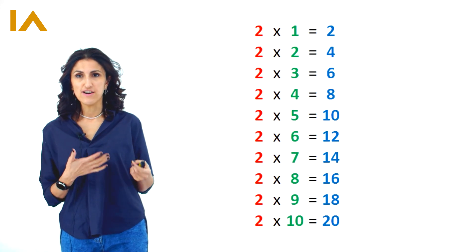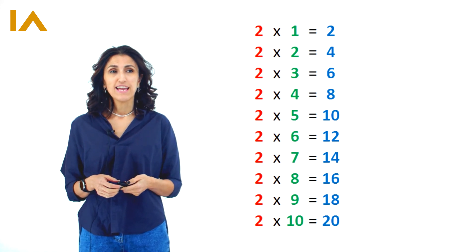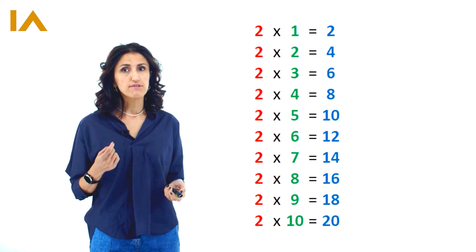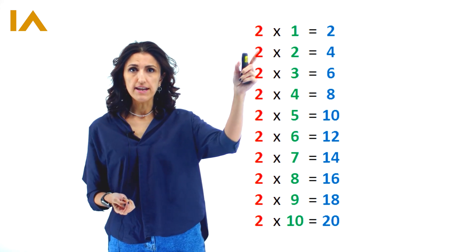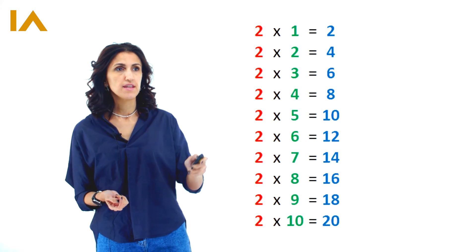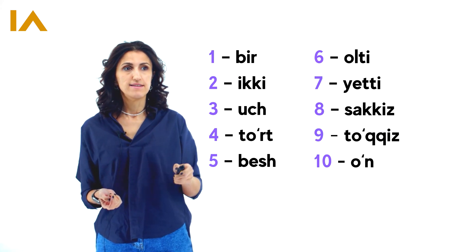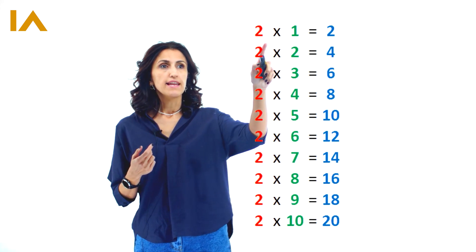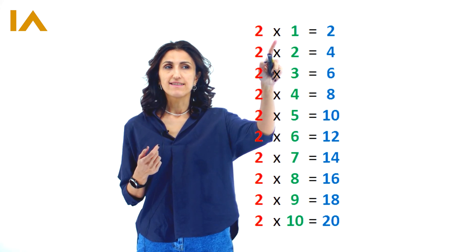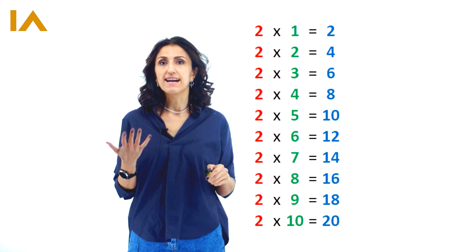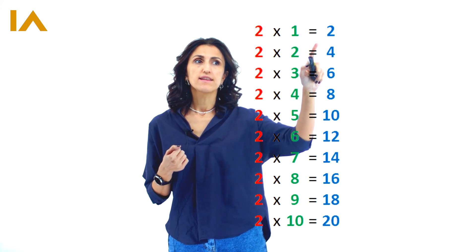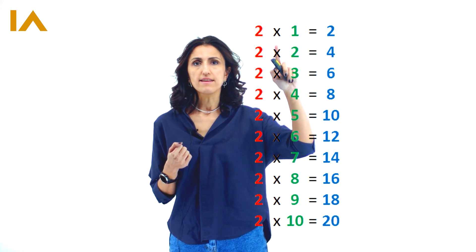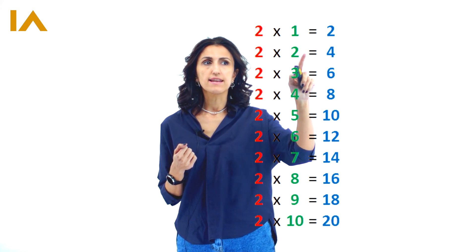Okay, now here's multiplication by two. If I was reading it in Uzbek, I would read it this way. So this is iki, right? And this is bir. Iki karra — multiply is karra. Iki karra bir, iki. Iki karra iki, tort.